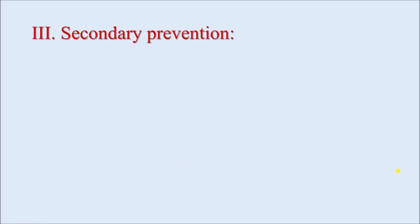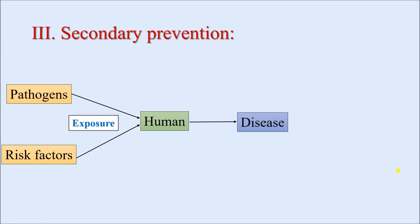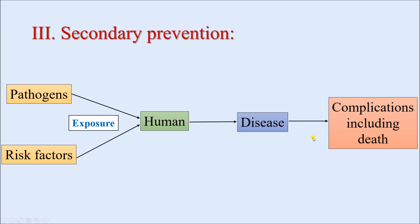Coming to secondary prevention — here the disease has already occurred. The pathogen and risk factors were present, the human population was exposed, and the disease has already developed. We know the disease can progress further to develop complications, including death. Here we want to take some measure so that the disease process does not develop further to any kind of complication. We are trying to cut down the progression of the disease to the stage where complications including death can occur.